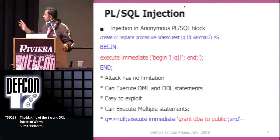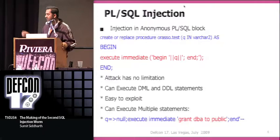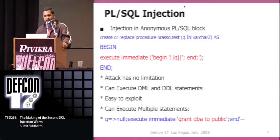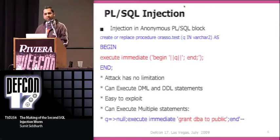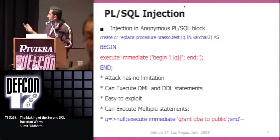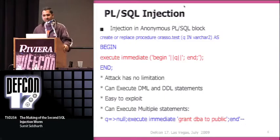This is how a typical PL/SQL injection would look like. I've created a sample procedure called orasso.test. It takes a variable, and that variable gets embedded into a begin-end string, used in construction of an anonymous PL/SQL block, which then gets dynamically executed. You can clearly see it's a PL/SQL injection, and you can take control of that PL/SQL block.